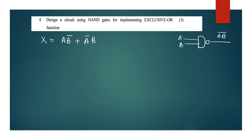Using NAND gates, you can represent the required terms. You can apply a NAND gate to A and B, where the NAND gate gives B into B complement. Adding another NAND gate yields A B complement plus A complement B.